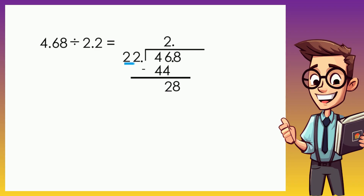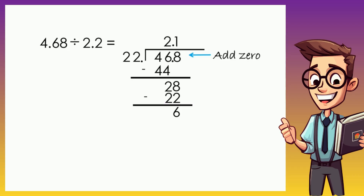We need a number that when multiplied by 22 is closer or equal to 28. That number is 1, because 1 times 22 is 22. Subtracting the two numbers results in 6. Since there is still a remainder, we add 0 and bring it down, giving us 60. We need a number that when multiplied by 22 is closer to 60 — that number is 2, because 2 times 22 is 44.